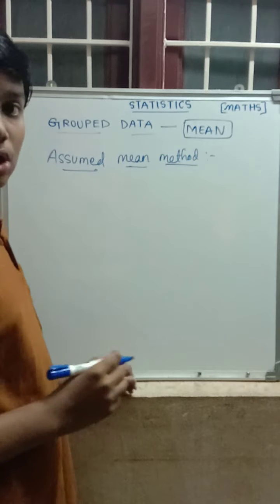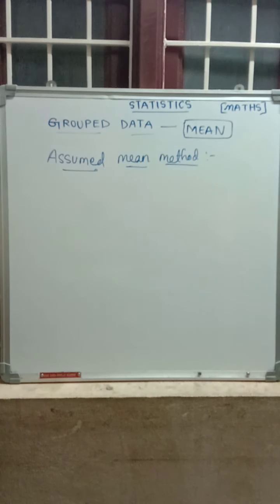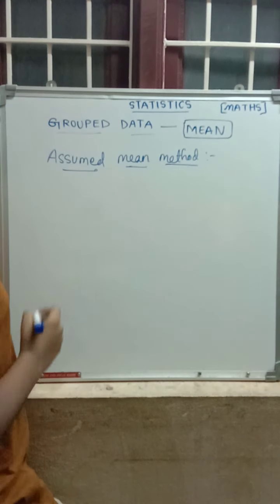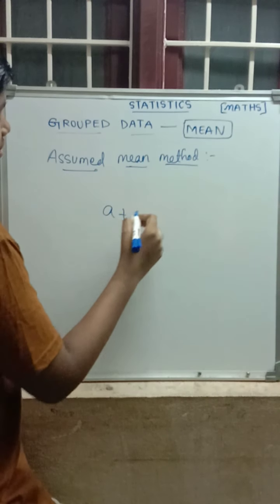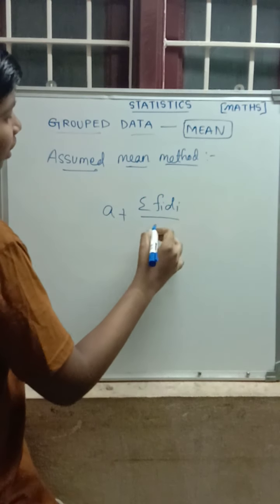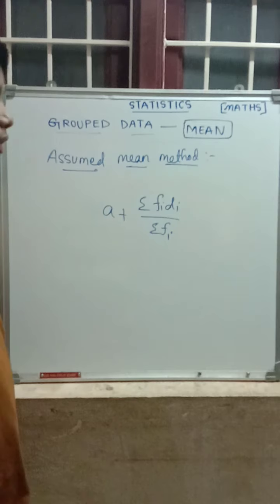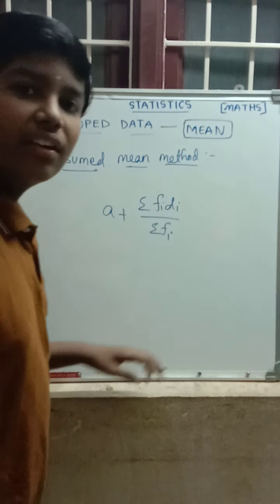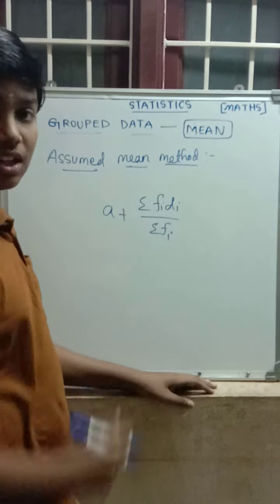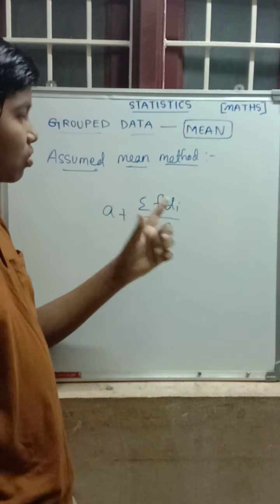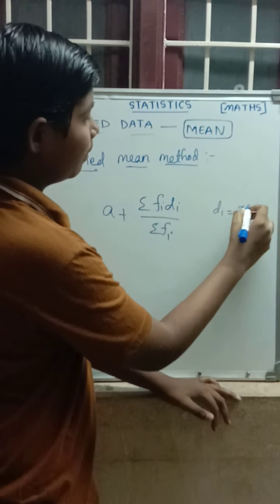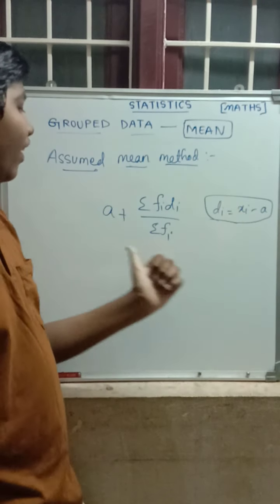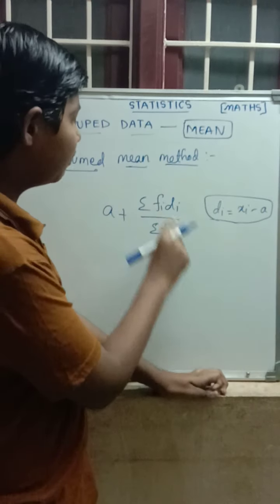Assumed mean method. Here there is a formula to find the mean using the assumed mean method. We have to first assume a value A from the given observations. The formula is: Mean = A plus summation of Fi·Di divided by summation of Fi. As in the direct method, in place of Di there is Xi, giving summation Fi·Xi by summation Fi. But here one more term is added — Di, where Di equals Xi minus A. So Xi will be covered and A will also appear. Summation Fi·Di by summation Fi is the formula for the assumed mean method.